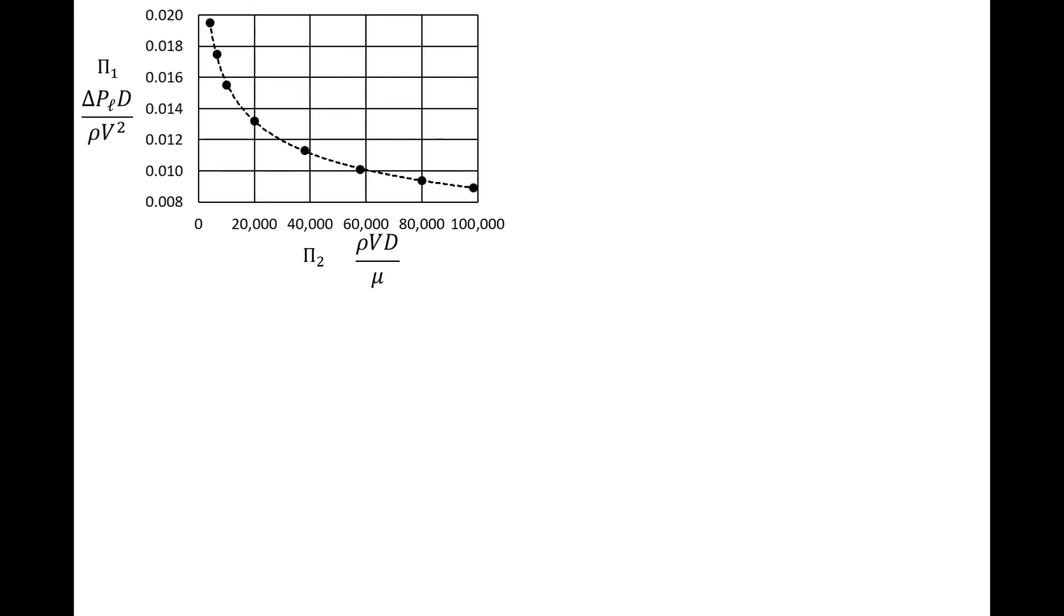You can experiment with different types of curve fits until finding one that fits the data well. In this case, a power-law relationship does an excellent job of fitting the data, and the curve shown on the plot is a power-law curve. A power-law relationship is defined as the dependent pi group being equal to some constant, c1, times the independent pi group raised to some constant, c2.